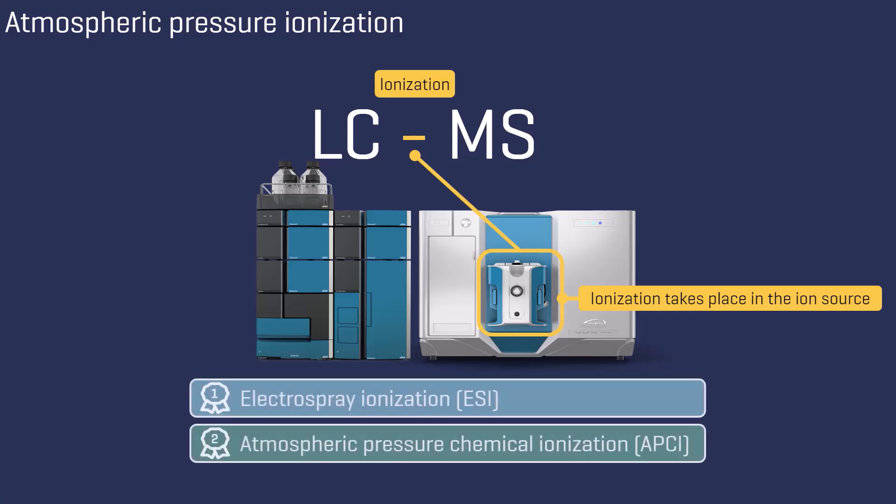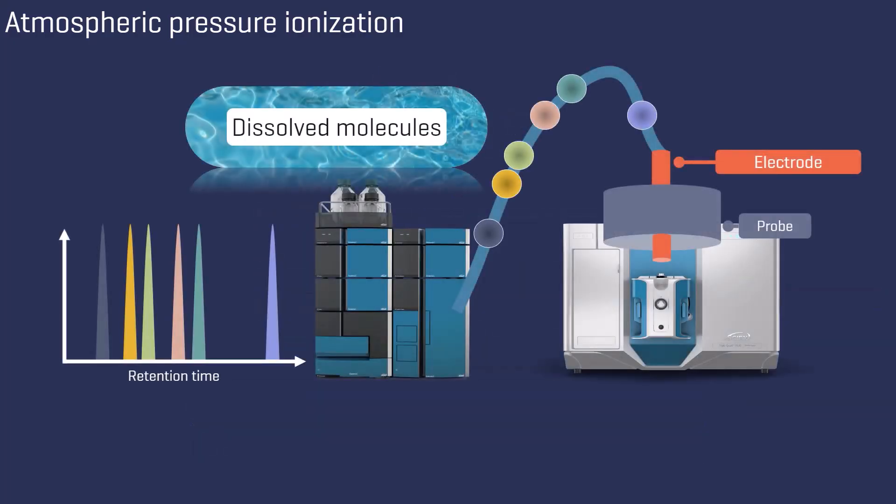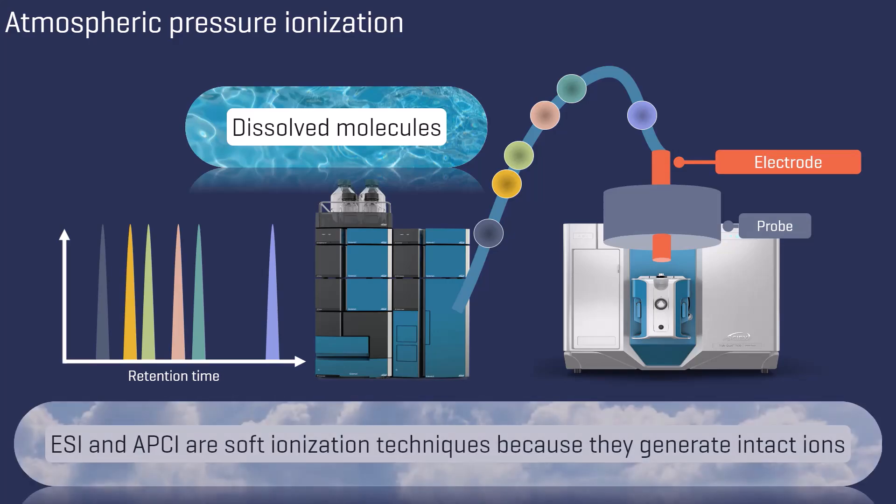The most commonly used ionization techniques in combination with a mass spectrometer are the electrospray ionization, also referred to as ESI, and atmospheric pressure chemical ionization, or APCI. Both ESI and APCI can be combined with liquid chromatography, and they are classified as soft ionization techniques, as they generate intact molecular ions.